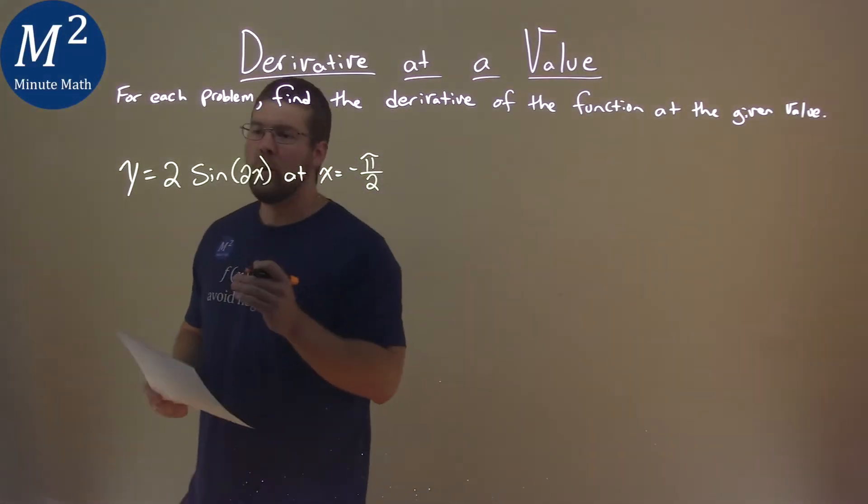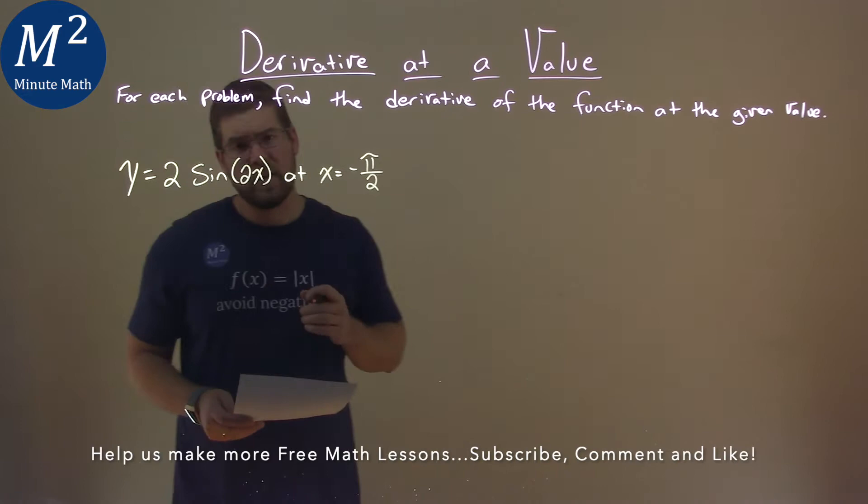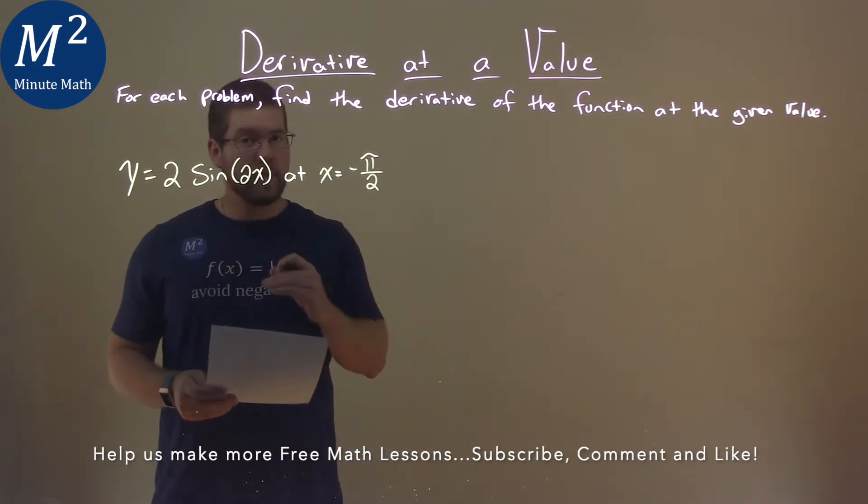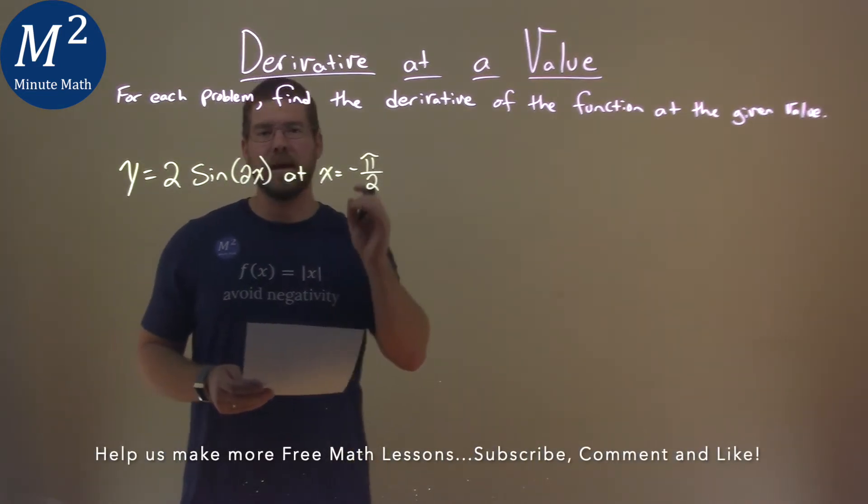We're given this problem right here: y equals 2 times the sine of 2x, and we need to find the derivative of that at x equals negative pi over 2.